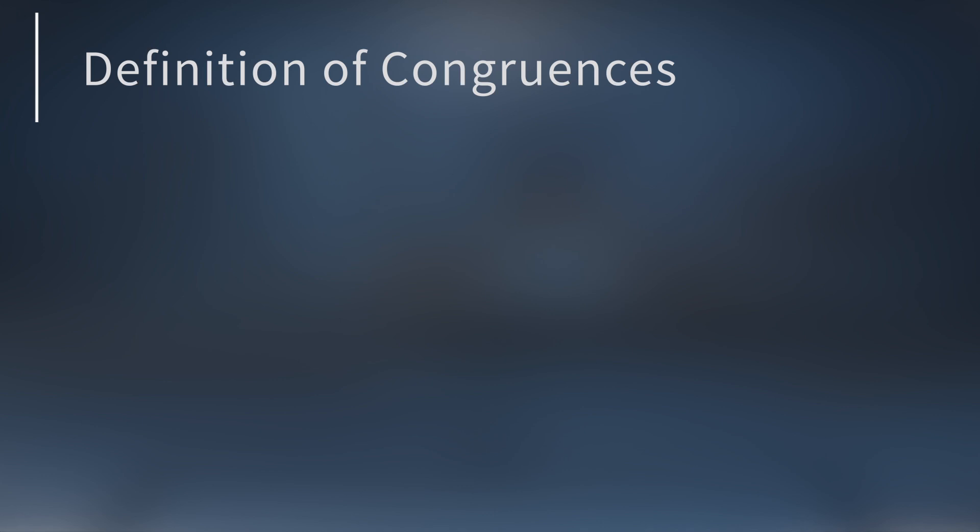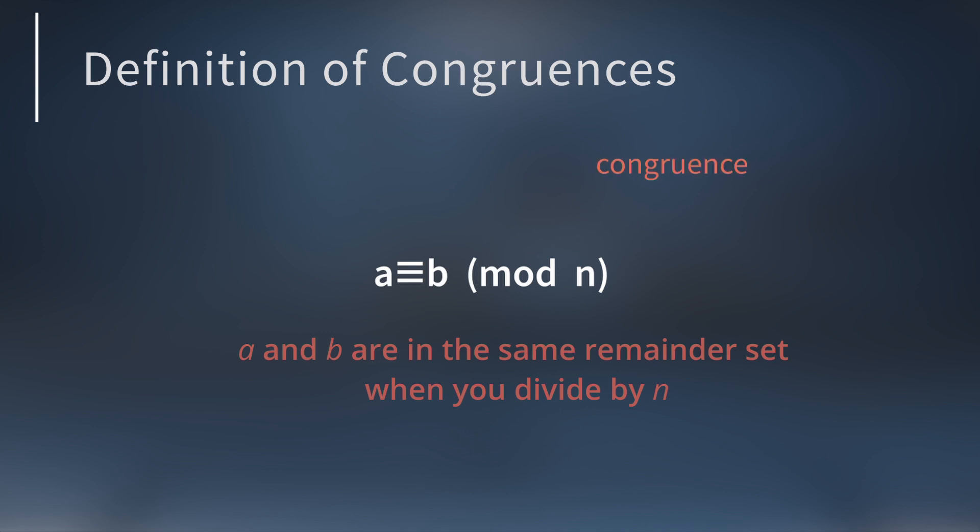There is also some notation that is used when talking about modular arithmetic. What this notation says is that A and B are in the same remainder set when you divide by N. This expression is called a congruence.